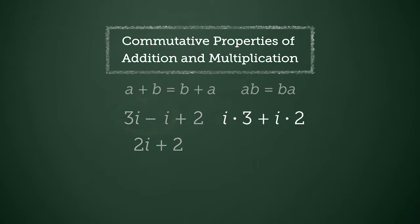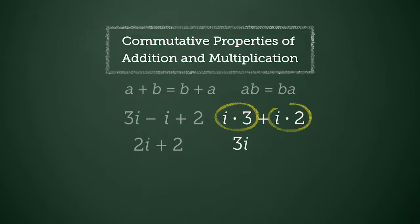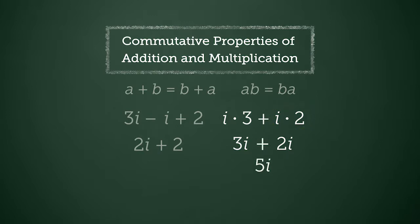Here's an example that uses the commutative property of multiplication. Remember that because of the order of operations, multiplication is performed first. This can be simplified into 3 times i, or 3i, plus i times 2, or 2i. 3i plus 2i is 5i.